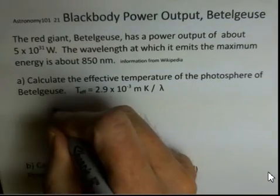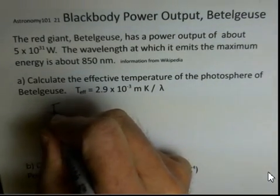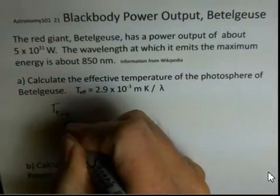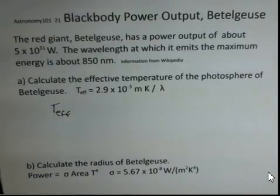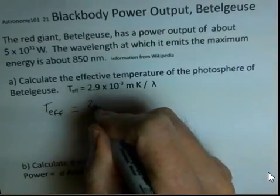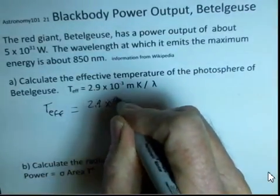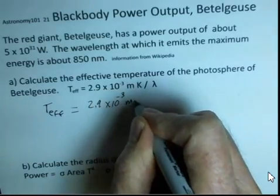So first, the temperature. This effective temperature of the blackbody, we're assuming the star is a blackbody. That's an approximation, but it's not too bad. So 2.9 times 10 to the minus 3 meters times kelvins.